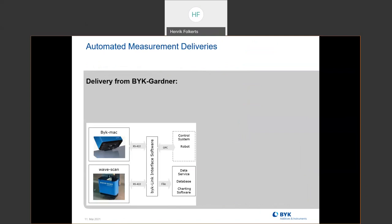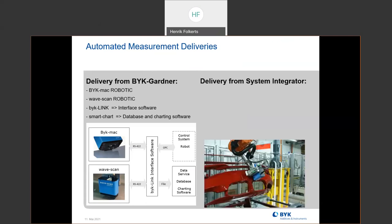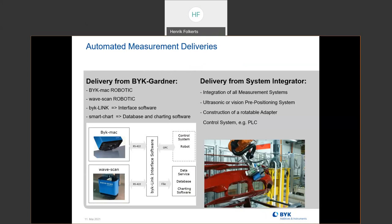When we talk about robotics, everyone asks what BIC-Gardener is going to send them. We send you the BIC-MEC robotic, the WaveScan robotic, and the BIC-Link interface software. Your integrator handles Smart Charts, the integration of all the measurement systems, either the ultrasonic or vision pre-positioning, and the construction of the rotatable adaptor. When you have two instruments on the same robot, they can actually spin and take the other measurement. The integrator also handles the control system or PLC and the programming of the locations.